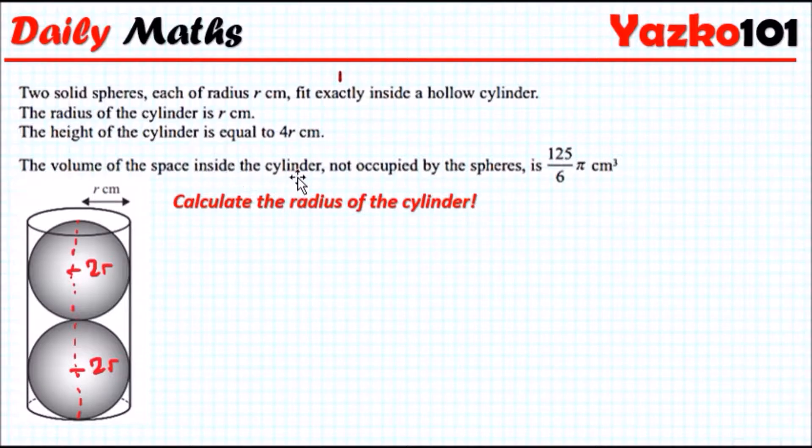The volume of the space inside the cylinder not occupied by the spheres is given by 125 over 6π. So we can just label it here. The volume is 125 over 6π centimeter cubed. So calculate the radius.